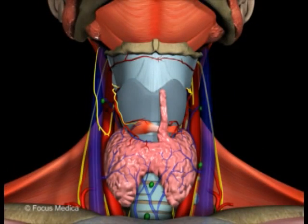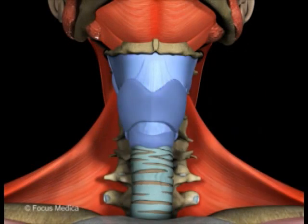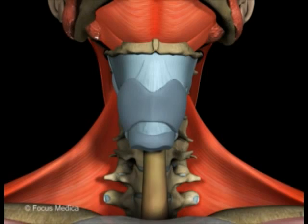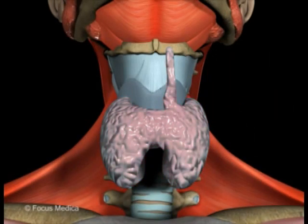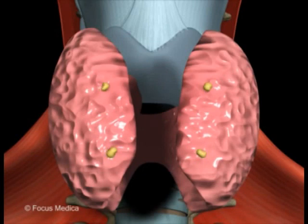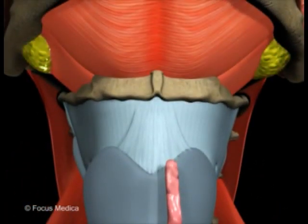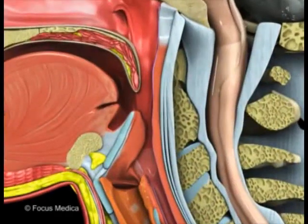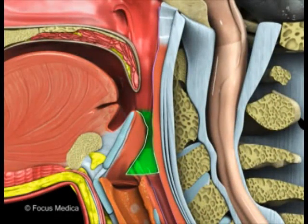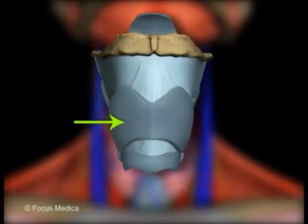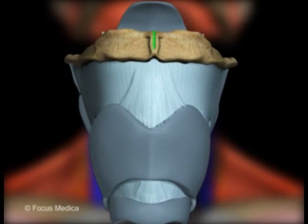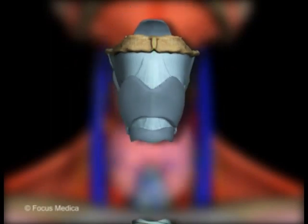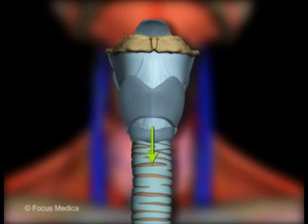The viscera of the neck comprises the larynx, trachea, esophagus, thyroid gland, parathyroid gland, and the submandibular salivary gland. The adjacent part of the pharynx, the laryngopharynx, is also included. The larynx is prominently seen in the subhyoid region in the midline. The trachea is attached to it inferiorly.